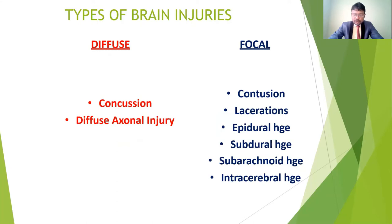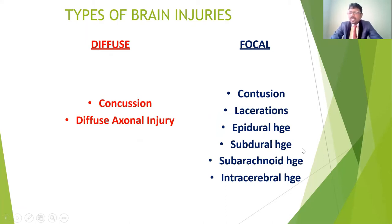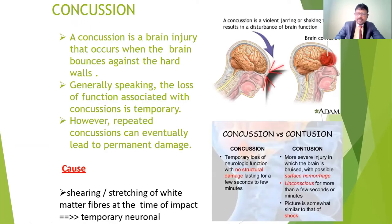Head injuries can be classified into different types. Diffuse injuries include concussions and diffuse axonal damage. Focal injuries include contusions, lacerations, epidural hemorrhage, subdural hemorrhage, subarachnoid hemorrhage, and intracerebral hemorrhage. Focal injuries produce severe focal signs and symptoms related to neuronal damage. We will discuss concussion and diffuse axonal injury in detail.